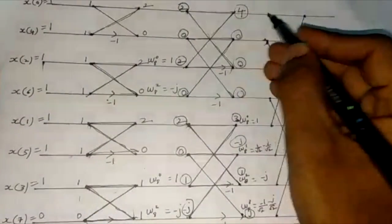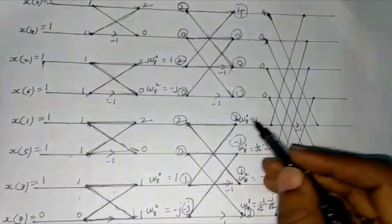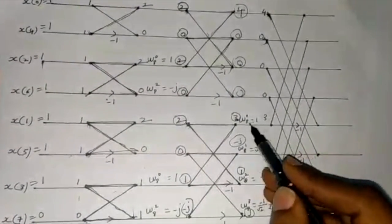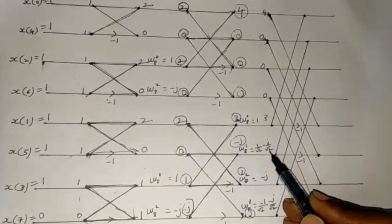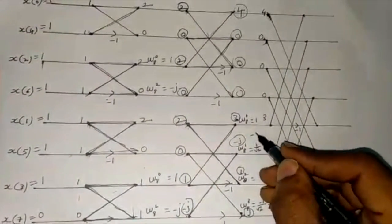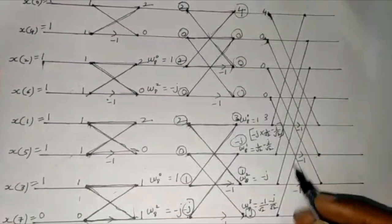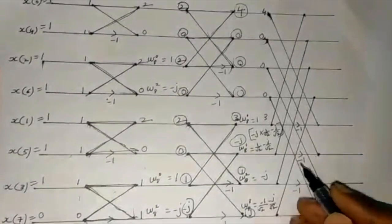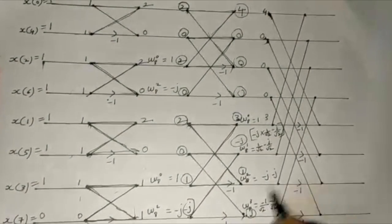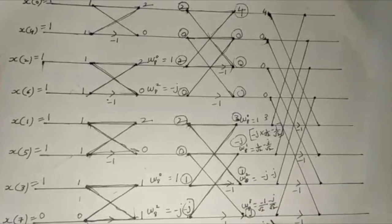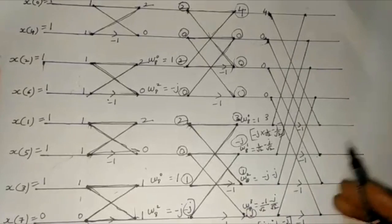Now transfer the values to the third column. So we have 4, 0, 0, 0. Then 3 × 1 = 3. Multiply −j by W8^1 = (1/√2) − j(1/√2). So −j × (1/√2 − j/√2) gives −j/√2 − 1/√2. And 1 × (−j) = −j. Then 1/√2 − j/√2. And j × (−1/√2 − j/√2).